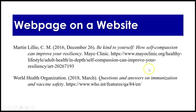Sometimes, like the CDC, organizations and entities will be both the author and the publisher of content on their website. In this case, the World Health Organization is both the author and the publisher of this web page. So we put them as author — World Health Organization — followed by the date, March 2018. Web pages will sometimes give you exact days; sometimes they don't — just use what they give you. The title of this web page is 'Questions and Answers on Immunization and Vaccine Safety,' and then the URL location.